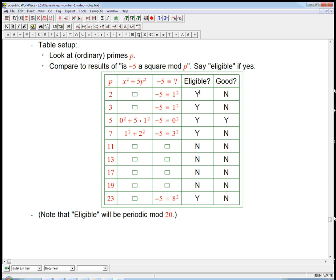So I'm going to say eligible if minus 5 is a square mod p. We know that if that fails, there's just absolutely no way that we could take p and express it as x squared plus 5y squared, by the analog of the arguments that we had before.